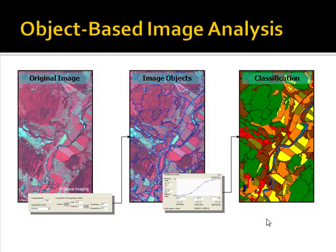Object-based image analysis, or OBIA, has gained popularity over the past few years. It differs from pixel-based classifiers in that pixels are grouped together into meaningful objects. OBIA most closely mimics manual interpretation because you can apply all the elements of image interpretation — you're not just limited to color and tone.